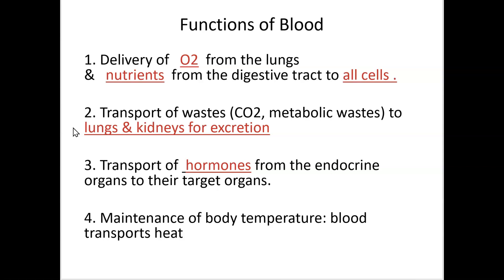Blood also transports hormones — a hormone is a chemical messenger transported in the blood. It helps maintain body temperature by moving heat. When you're very warm, your blood vessels to the skin vasodilate, getting bigger and carrying more blood to the surface so your skin gets red or pink and feels warm, eliminating heat. When you're cold, they vasoconstrict and keep that temperature closer to your core.